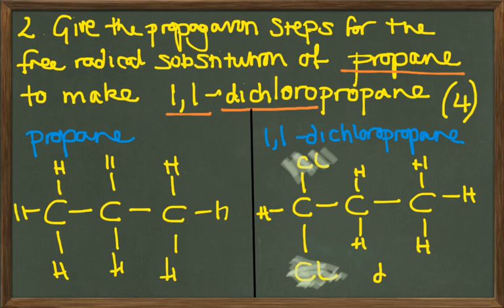If you've got a di substitution, this means you're going to have two pairs of propagation steps. The first pair, you're going to put the first chlorine on the carbon and the second pair, you'll put the second chlorine on that carbon. So let's have a look at the answer to this question.